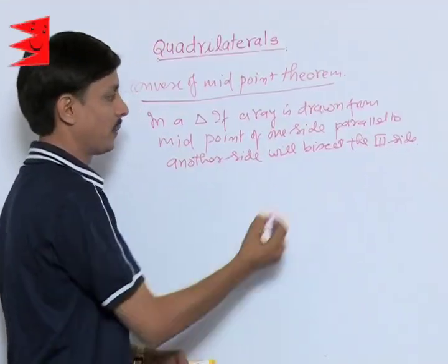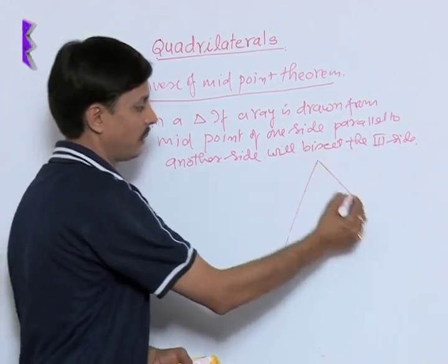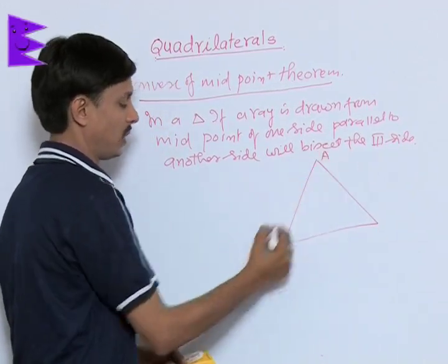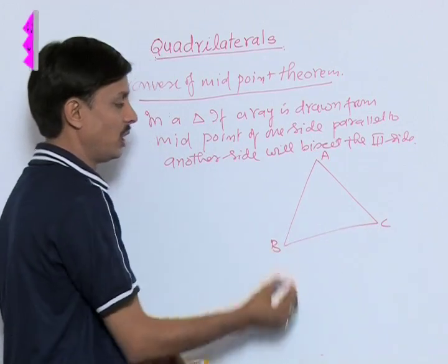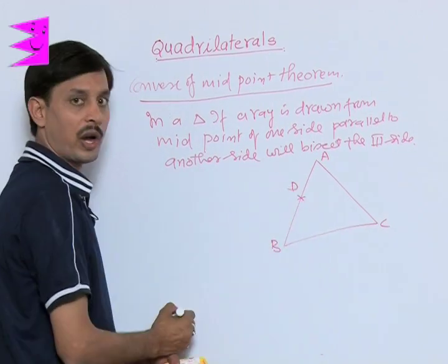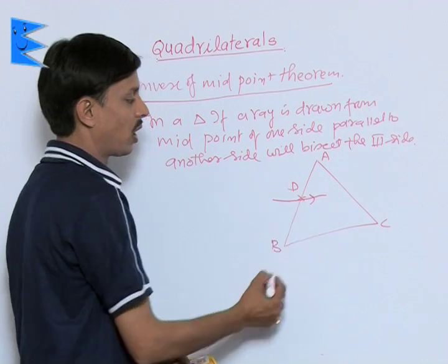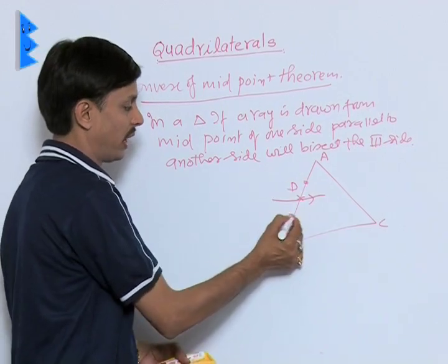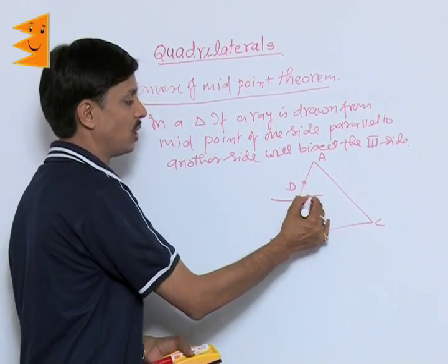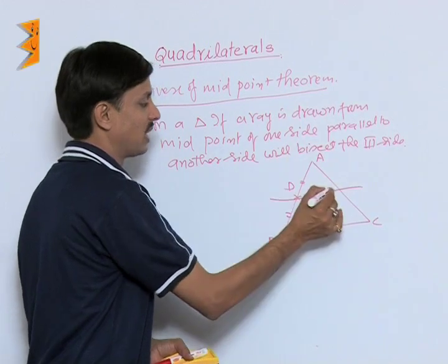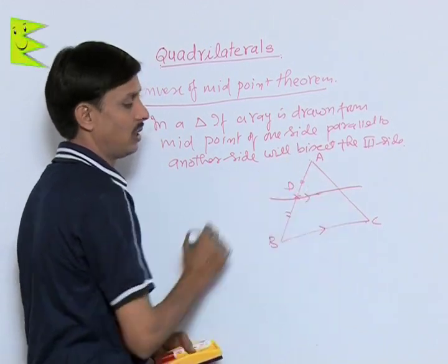You understand this fact that if there is a triangle, suppose ABC. This is triangle ABC. D is its midpoint and if a line or ray is drawn through this midpoint parallel to BC, then it will bisect the third side AC.